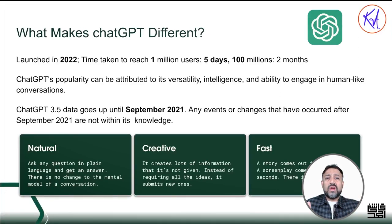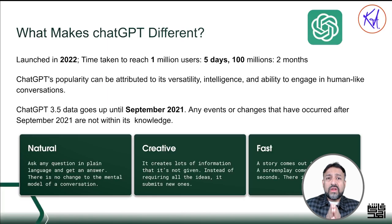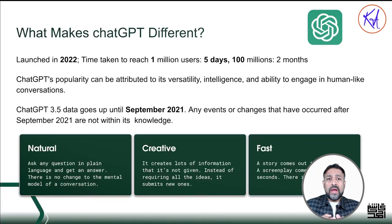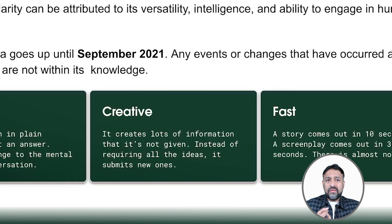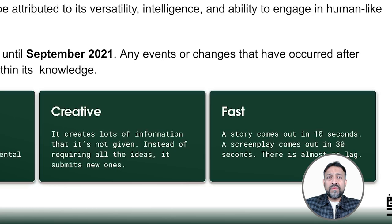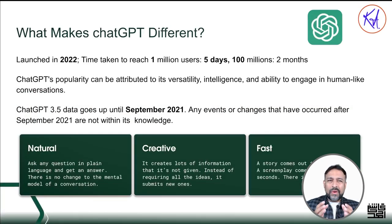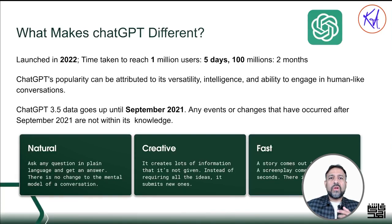Within just five days it had a whopping one million users, and it only took two months to reach 100 million users — that was record-breaking speed. Its knowledge is up to date until September 2021; anything beyond that is not in its brain. The features that set it apart when launched were that it was simple, natural, responsive, creative, and generated responses pretty fast. It's like your chatty buddy — smart, super smart. You can chat like a human, whether you are in a deep conversation or need an explanation. It is your go-to AI, thus the super fast adoption.